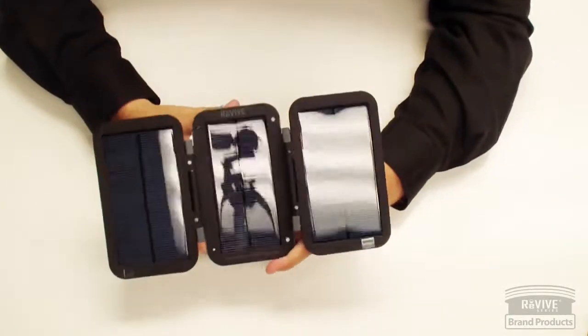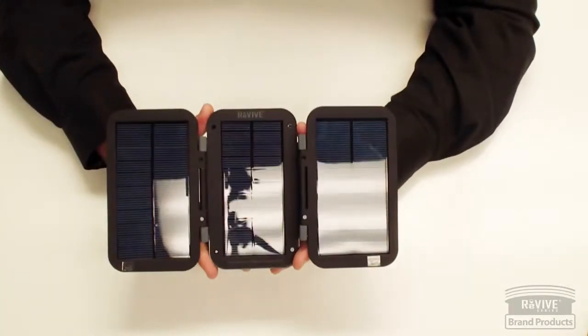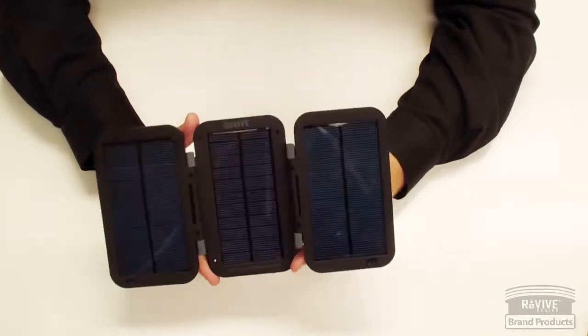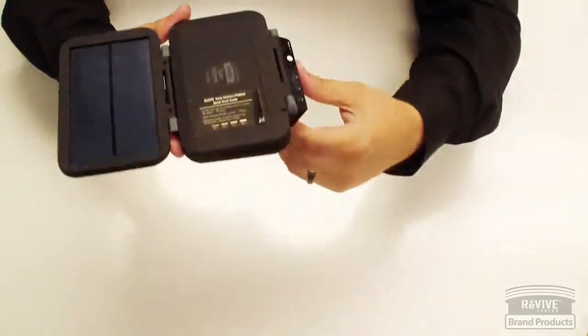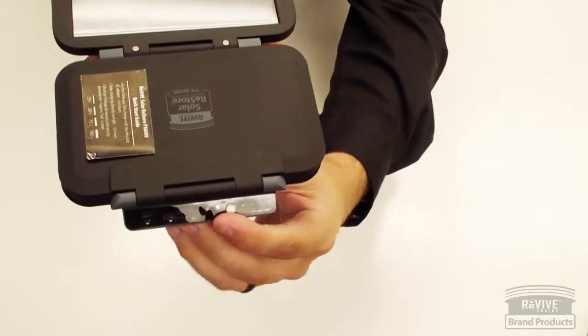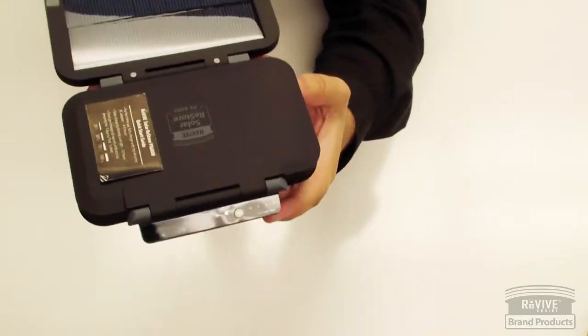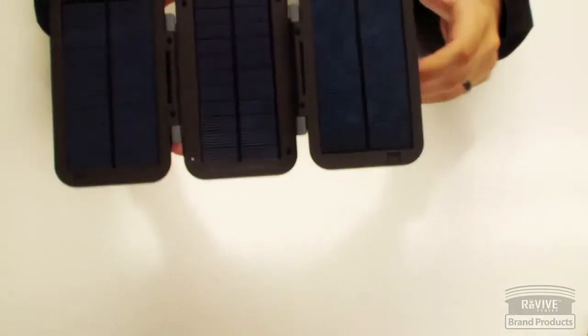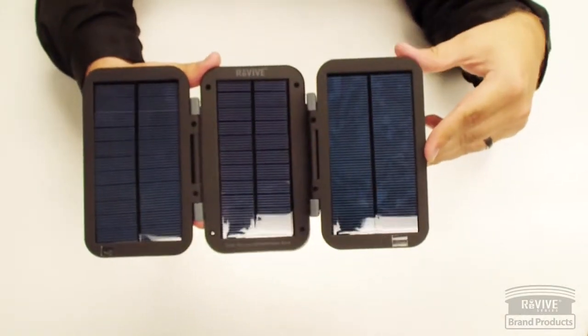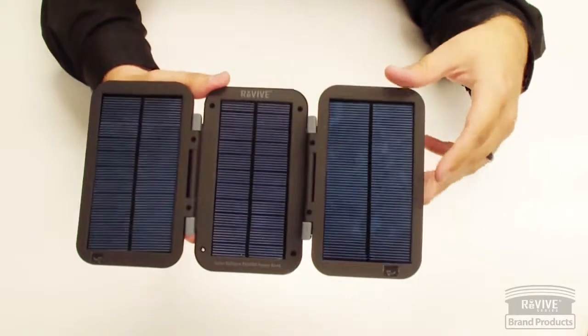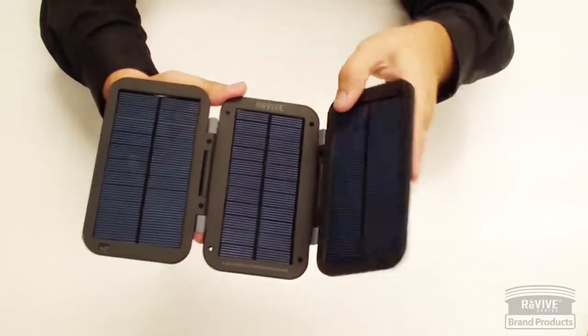Or you can also charge it in the sun. You stick this in direct sunlight and when it is charging via solar power there's a blue LED to the left of that test button that will light up, just to let you know that you're getting solar power to it. You want to leave it out in the sun for about 12 hours to get a full charge to the internal 6000mAh battery.